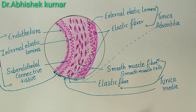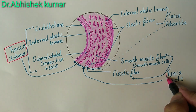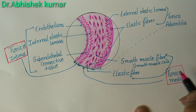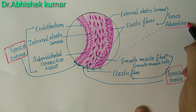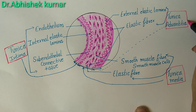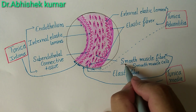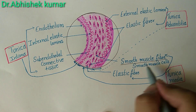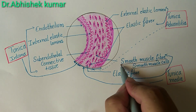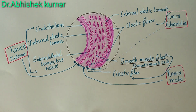The outer part of tunica adventitia is made of very loose connective tissue which merges with the surrounding alveolar tissue. It also contains vasa vasorum and unmyelinated sympathetic nerve fibers. This completes all three layers of medium-size artery, muscular artery, and distributing artery.